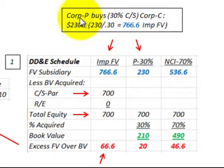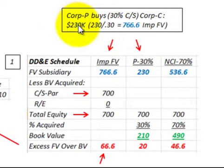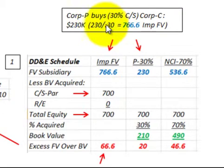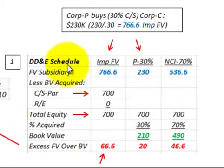Corporation P buys 30 percent of the common stock of corporation C. Based on the $230,000 investment they made, doing the arithmetic: $230,000 divided by 30 percent gives an implied fair value of corporation C of $766,600.